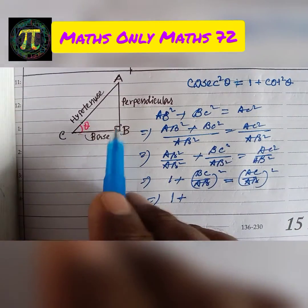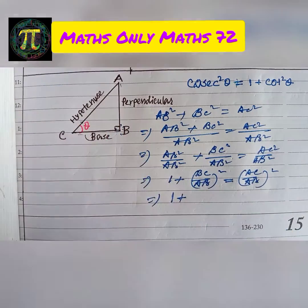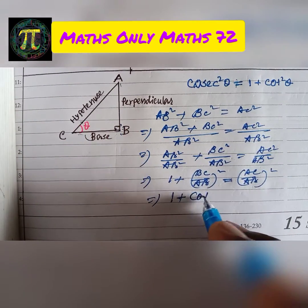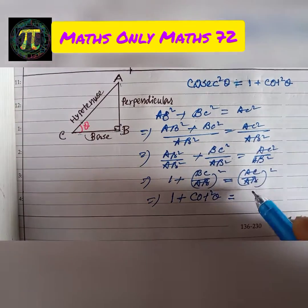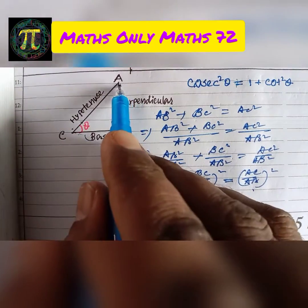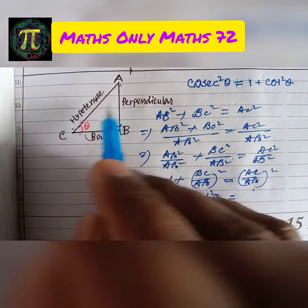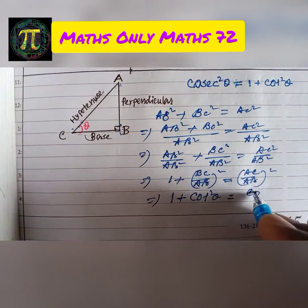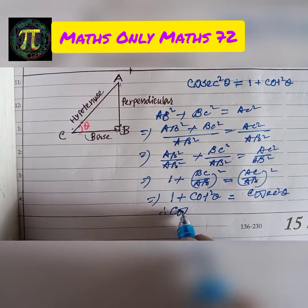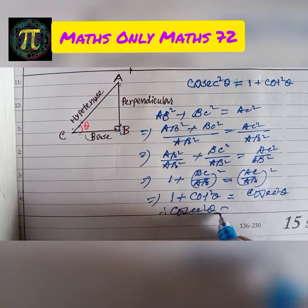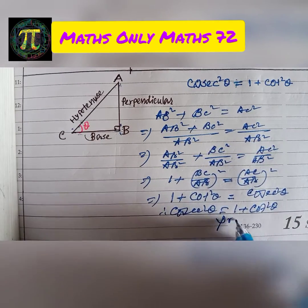1 plus BC by AB — base by perpendicular — is cot theta. Cot square theta equals AC by AB — hypotenuse by perpendicular — which is cosec. Cosec square theta. Therefore, cosec square theta equals 1 plus cot square theta.